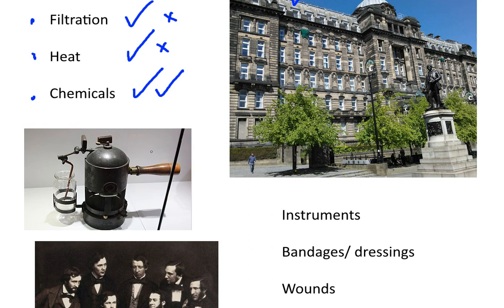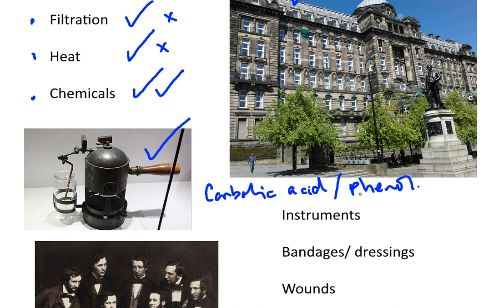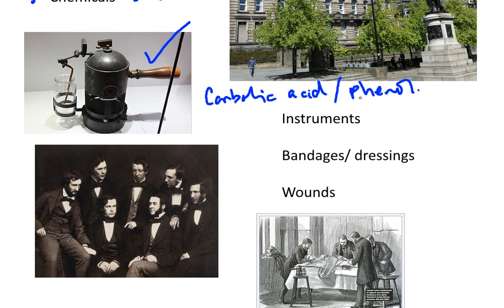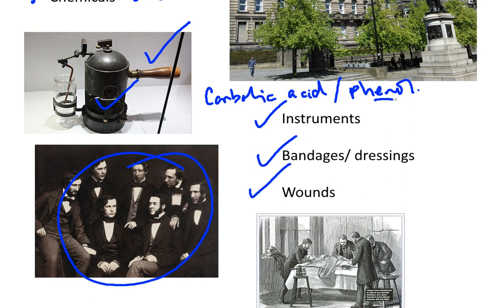And so he invented this piece of equipment here, which is a spraying machine. The chemical that he would use is called carbolic acid, or more formally today known as phenol. He would use this phenol carbolic acid with the spray machine, and with the assistance of his colleagues who worked at the Royal Infirmary in Glasgow with him, he would spray the instruments, the bandages and dressings, and then the wounds of his patients with phenol — in this way killing the microbes that were contaminating these and infecting his patients.